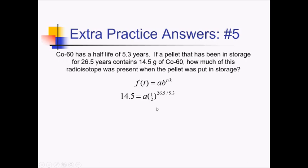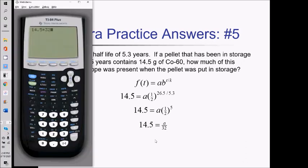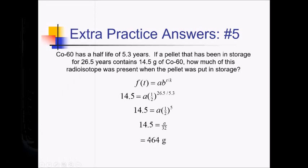So we have A times one-half to the fifth equals 14.5. One-half to the fifth is 1 over 32, so this is A over 32 equals 14.5. Multiplying both sides by 32 gives 464 grams.